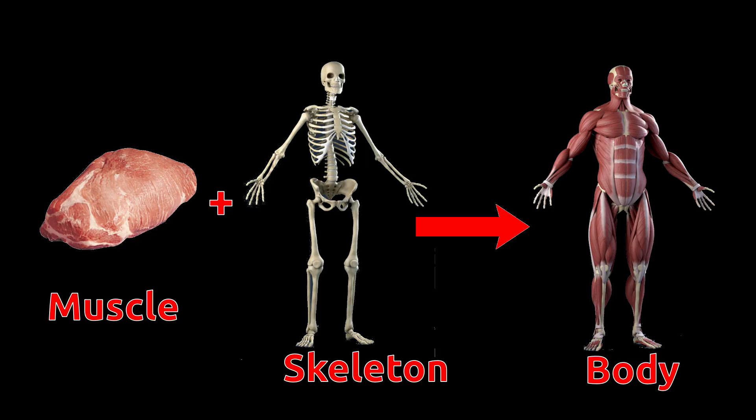1. Support to the body. Skeleton provides basic structure and shape to the body as we see. Skeleton supports the soft tissues of the body. Without skeleton, our muscles will be a lump of meat.